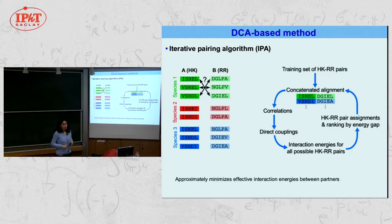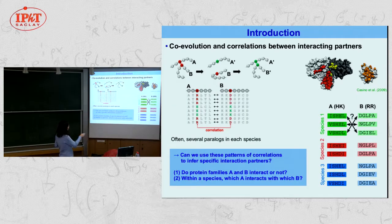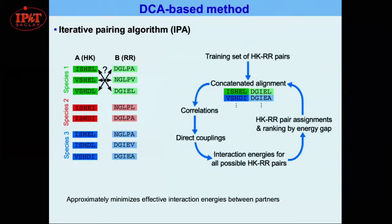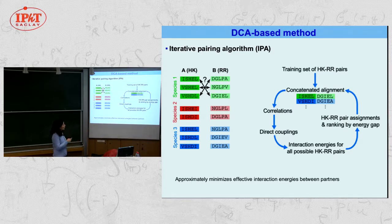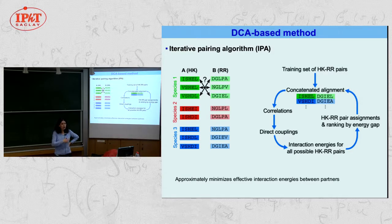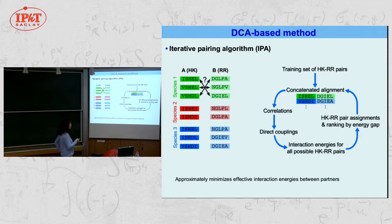There are many ways to exploit these correlations. In the literature, there are phylogeny-based strategies and Bayesian tree strategies. I'm going to focus on what I have participated in — first, a method based on maximum entropy inference. I call it DCA, which stands for Direct Coupling Analysis. This acronym has been used in the field to cover maximum entropy strategies, which were used to infer structure from sequences before, and are now used to infer interactions from sequences.